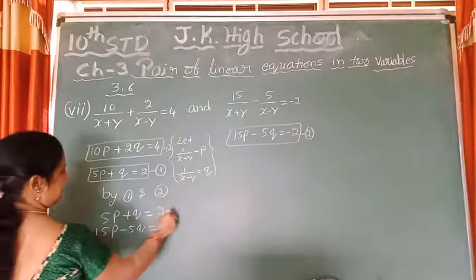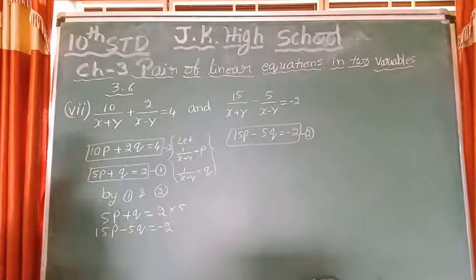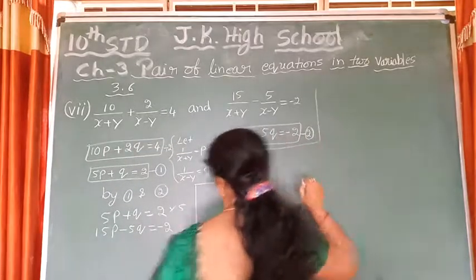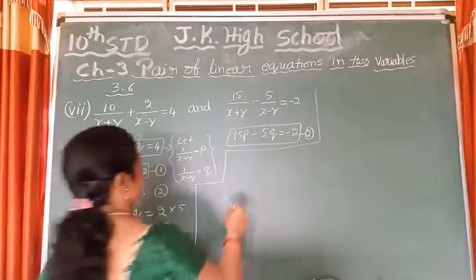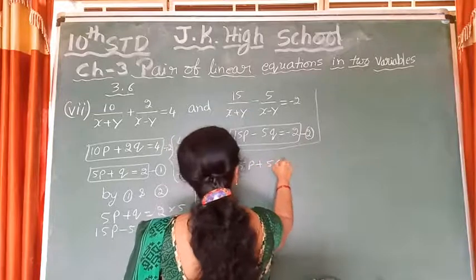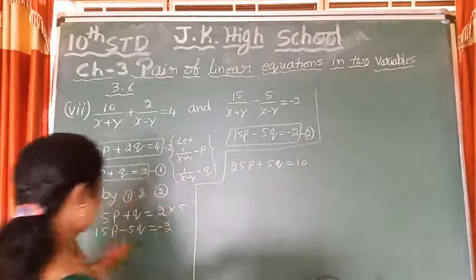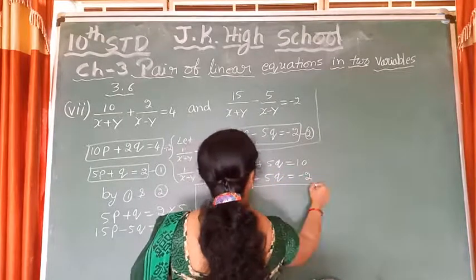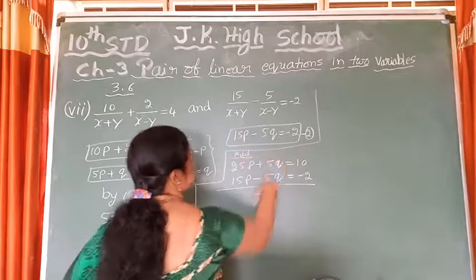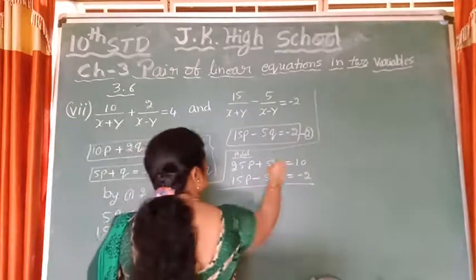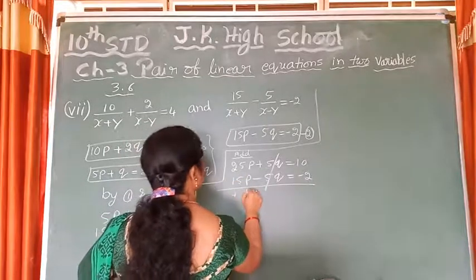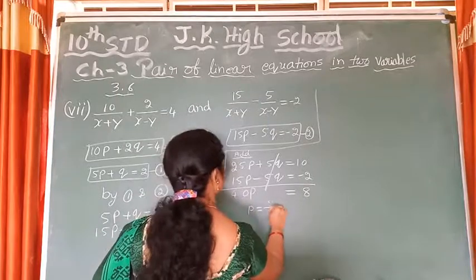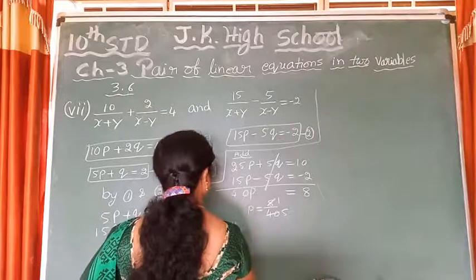Now if I multiply equation 1 by 5, I can eliminate the Q variable. After multiplication it becomes: 25P plus 5Q is equal to 10. The second equation remains: 15P minus 5Q is equal to minus 2. So by adding, the Q variable is eliminated. 25 plus 15 gives 40P. So 40P is equal to 8, and therefore P is equal to 8 by 40, which is 1 by 5.